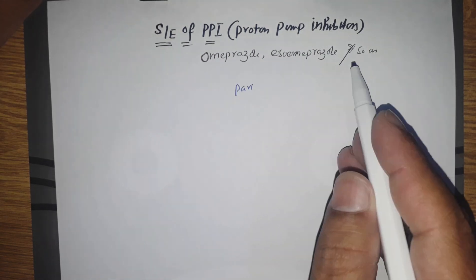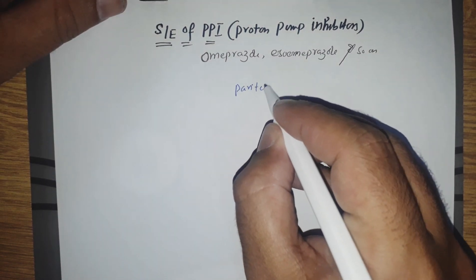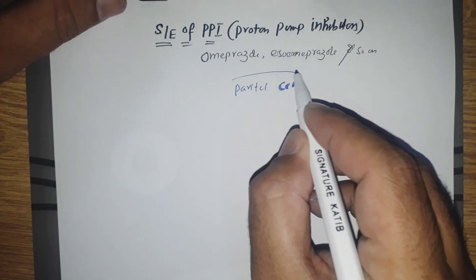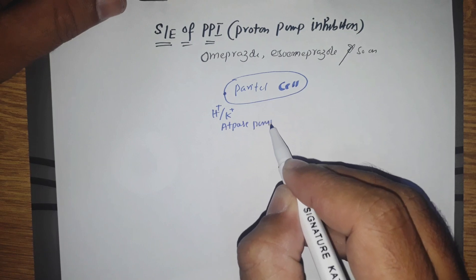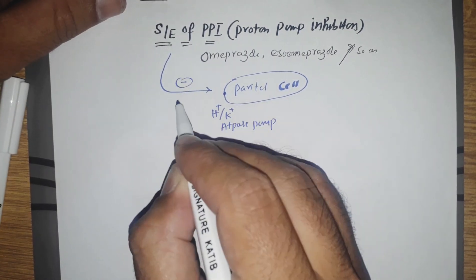Side effects of PPI (proton pump inhibitors): omeprazole, esomeprazole, and so on. The parietal cell in the stomach has a pump called the proton pump, or hydrogen-potassium ATPase pump. PPIs inhibit this pump. Through this pump,